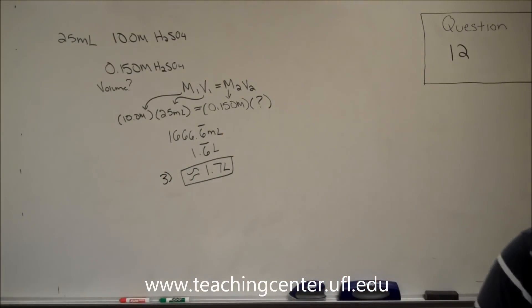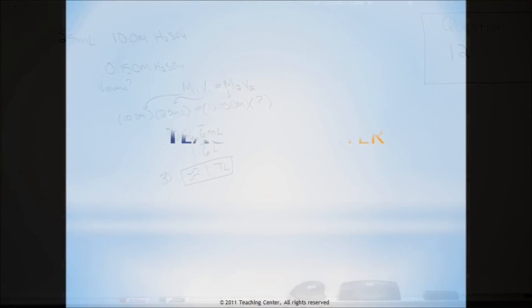Answer choice number three for question 12 says 1.7 liters. So, anytime we see a question like this, just think M1V1 equals M2V2. A simple proportion or ratio, and we can solve for X.